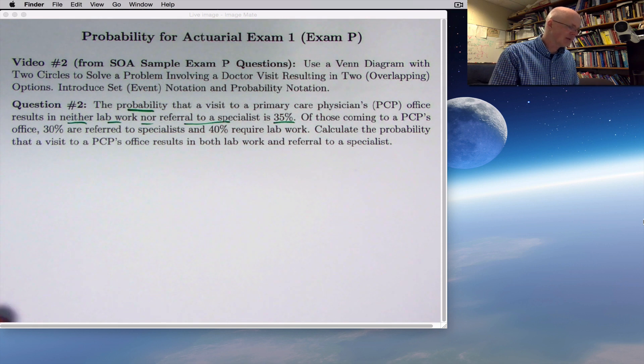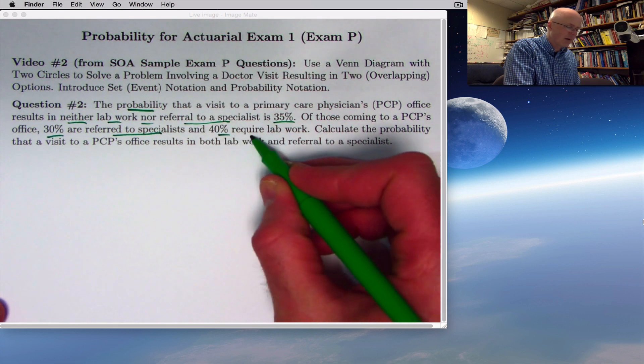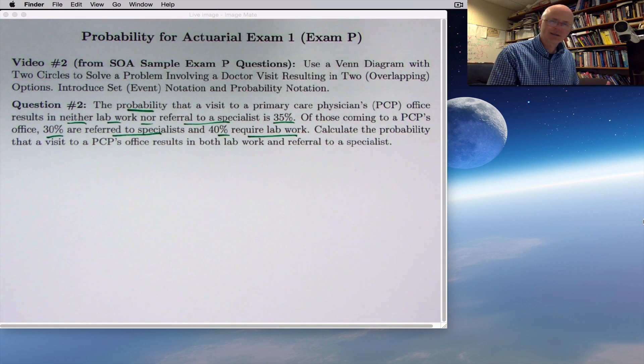Of those coming to the office, 30% are referred to specialists and 40% require lab work. These are just percentages, not labeled as probabilities. However, you should understand that these could be interpreted as probabilities. Again, this is past data we're looking at, but now we're about to pick somebody at random.